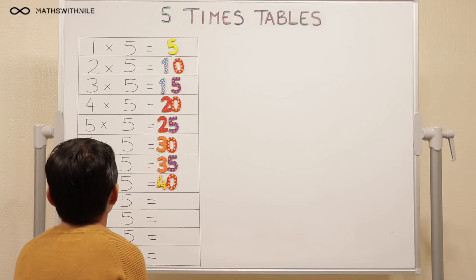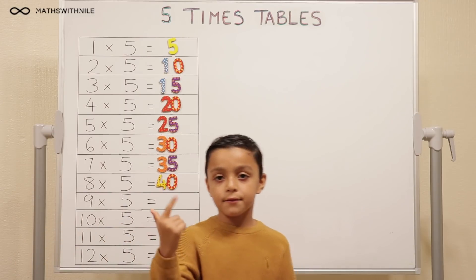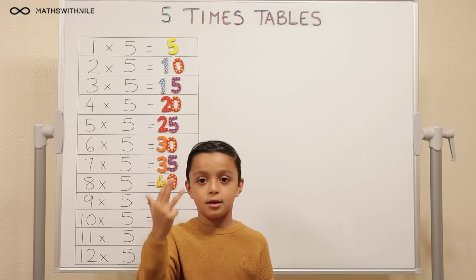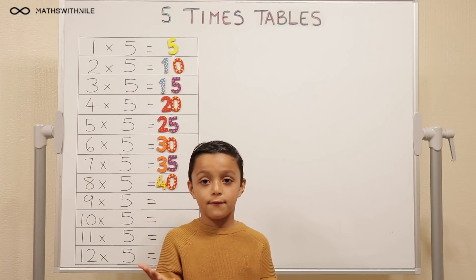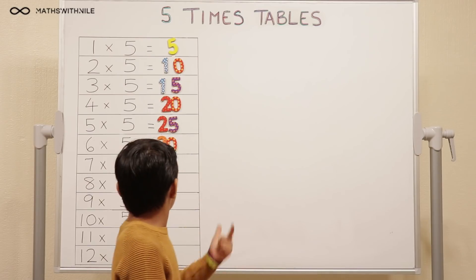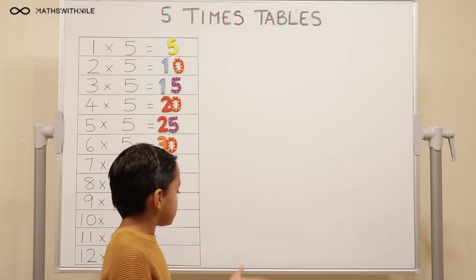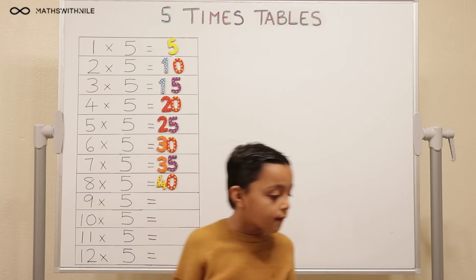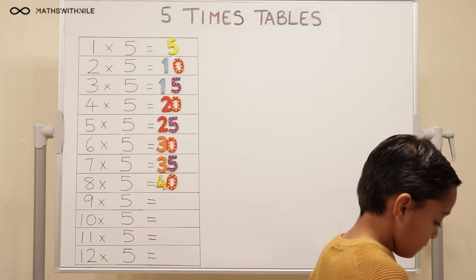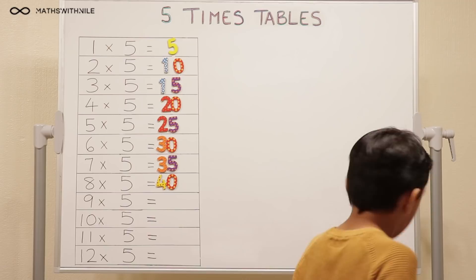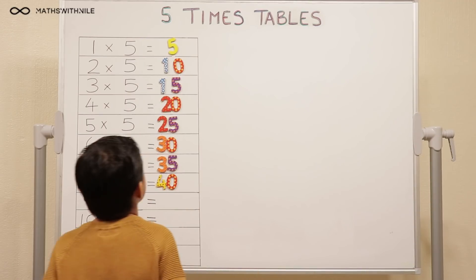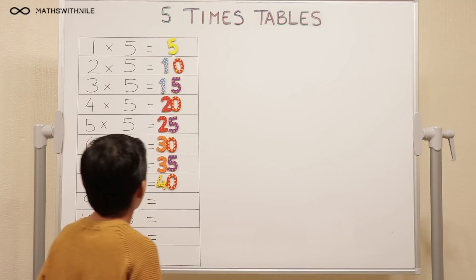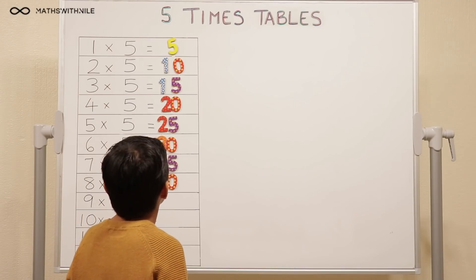Nine times five. Five, ten, fifteen, twenty, twenty-five, thirty, thirty-five, forty, forty-five. Forty-five. Good. We need a lot of fives for this and a lot of zeros. That's an interesting one. We'll talk about that in a minute.